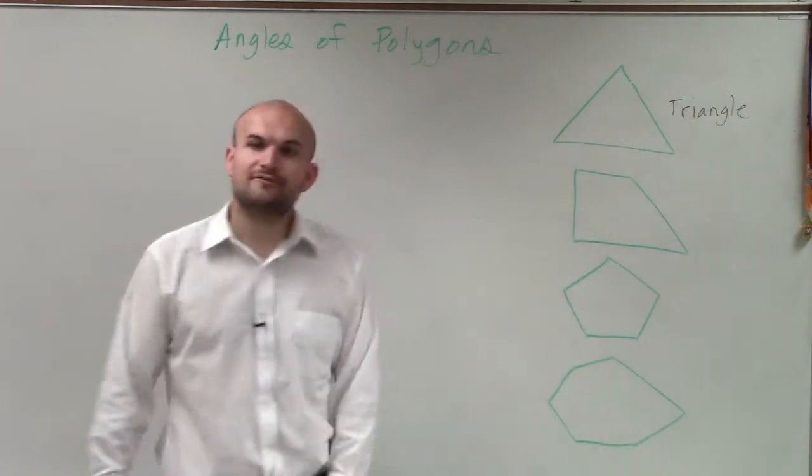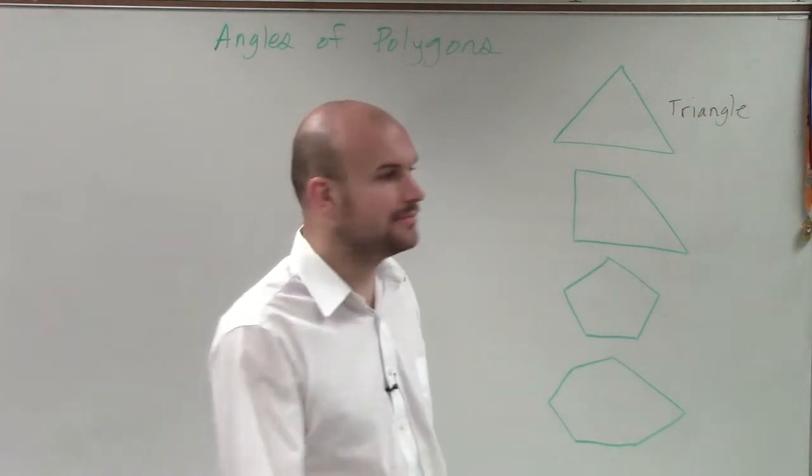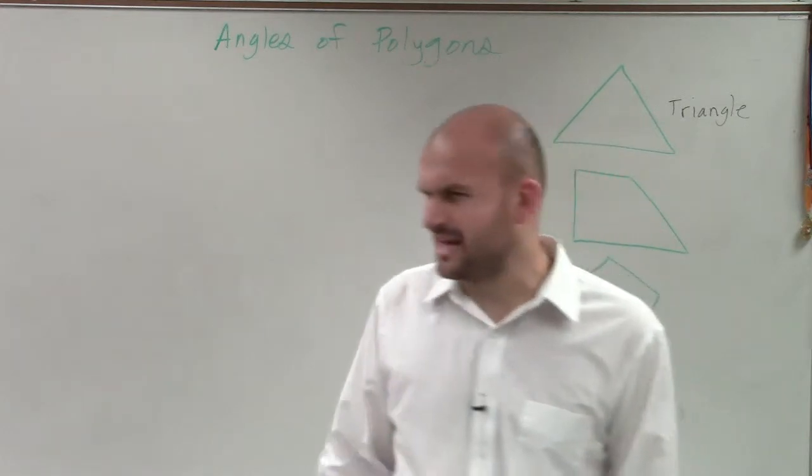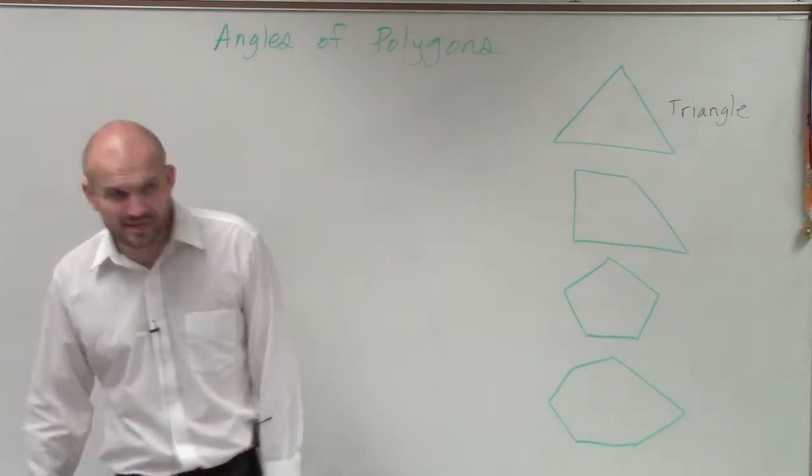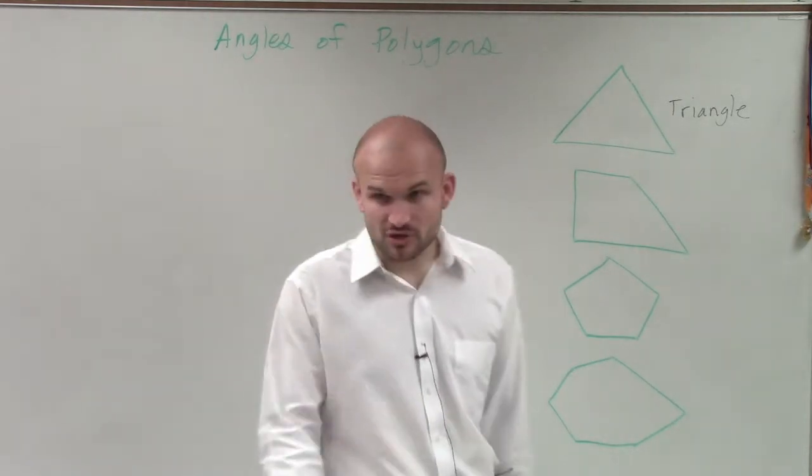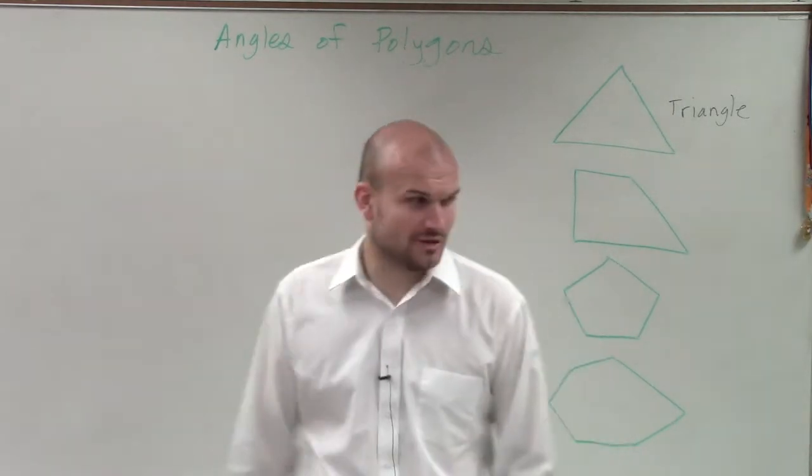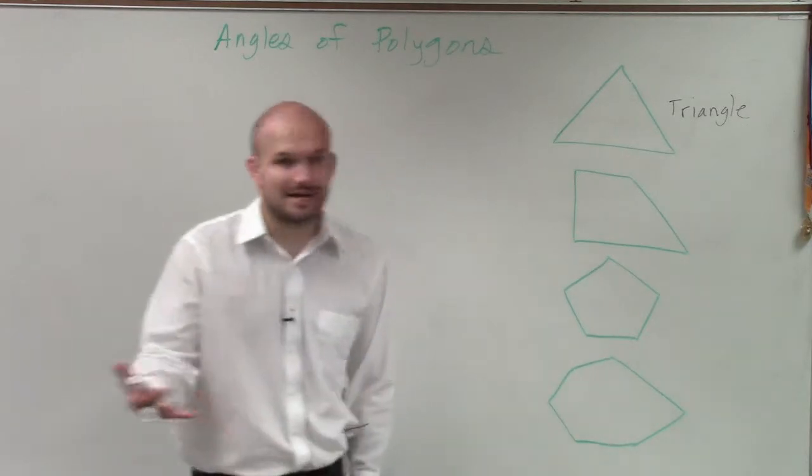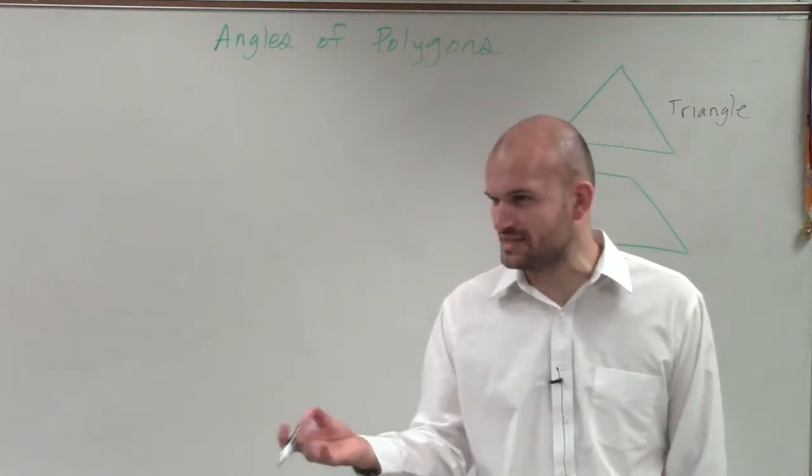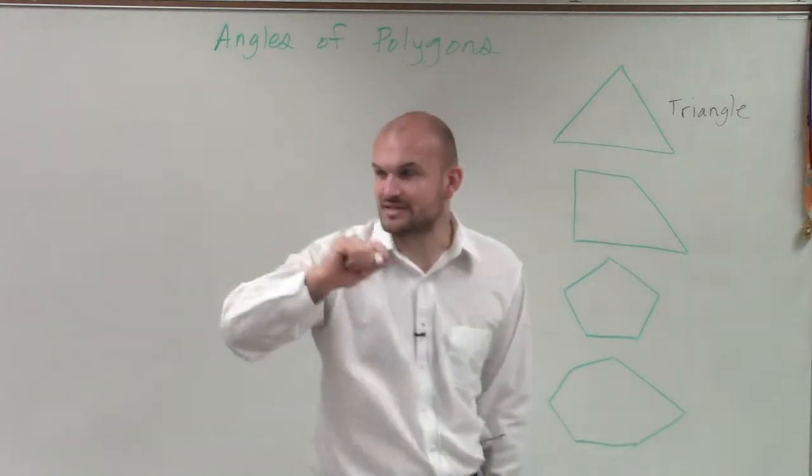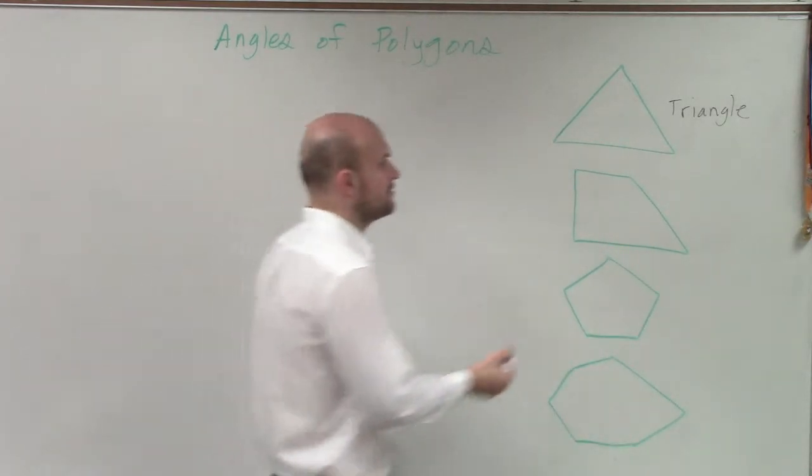Now, a four-sided polygon, there's a couple names for specific ones, right? We could talk about a square, a rectangle, a rhombus, a trapezoid, a kite. Those are a lot of specific types of these four-sided polygons. Does anybody know what we call a four-sided polygon, though? Not one of the specifics. A quadrilateral. A quadrilateral, very good.